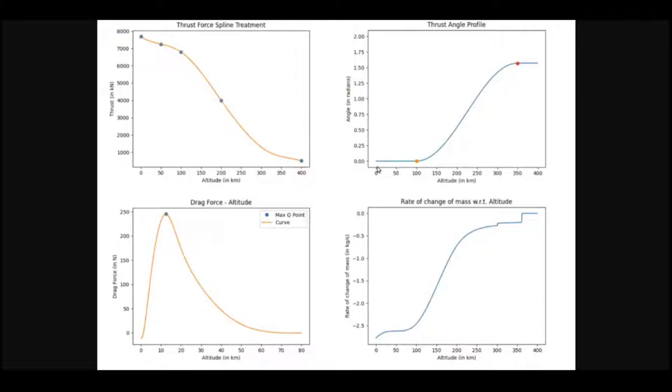As we can see from graph 1, a change in slope is observed at altitudes of around 100 and 350 kilometers, which correspond to the starting and ending altitude of gravity turn. Thus, confirming that the plots obtained agree with each other and are not contradictory.